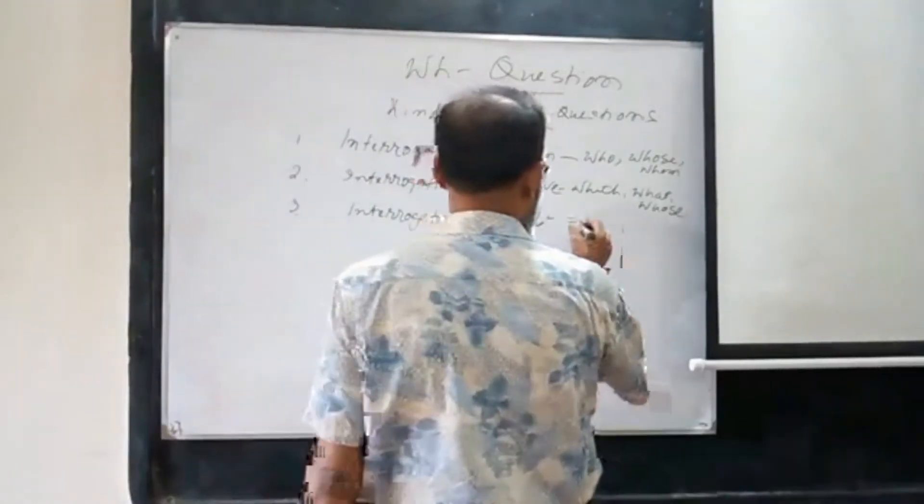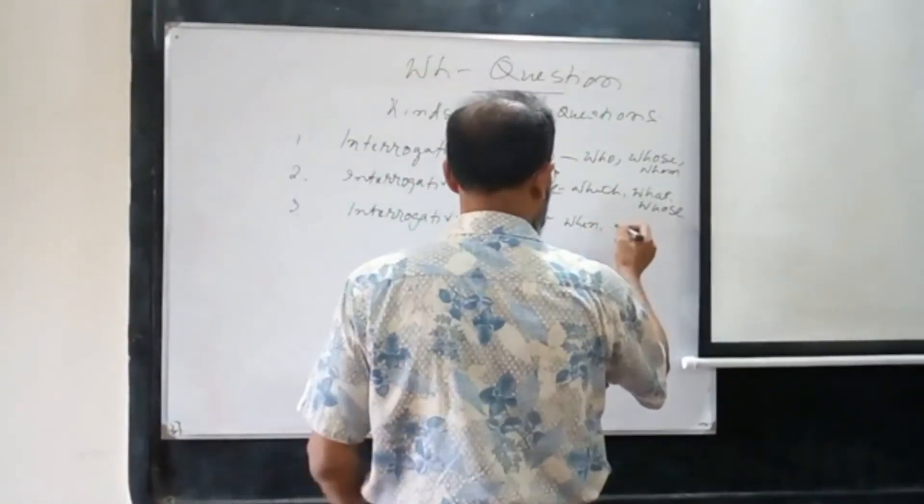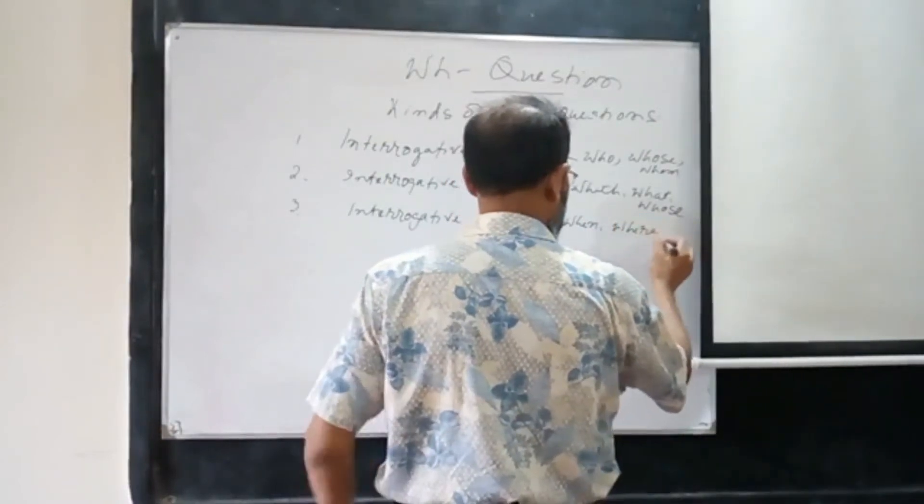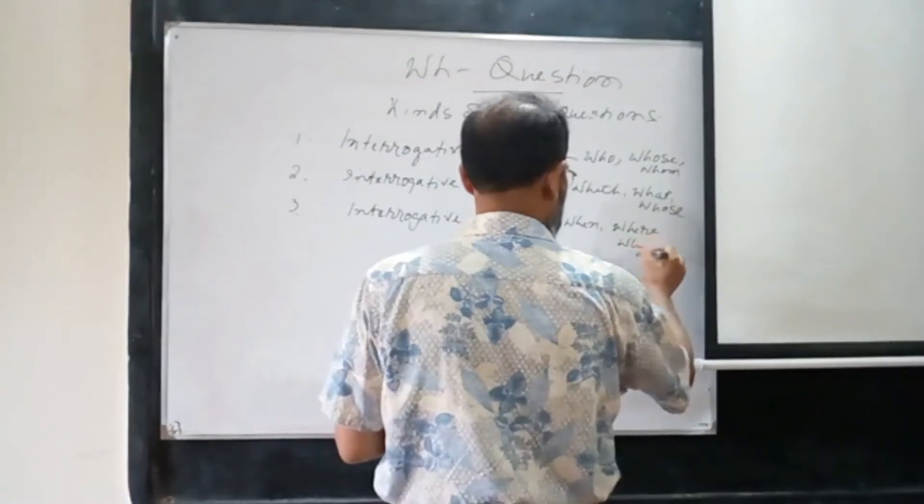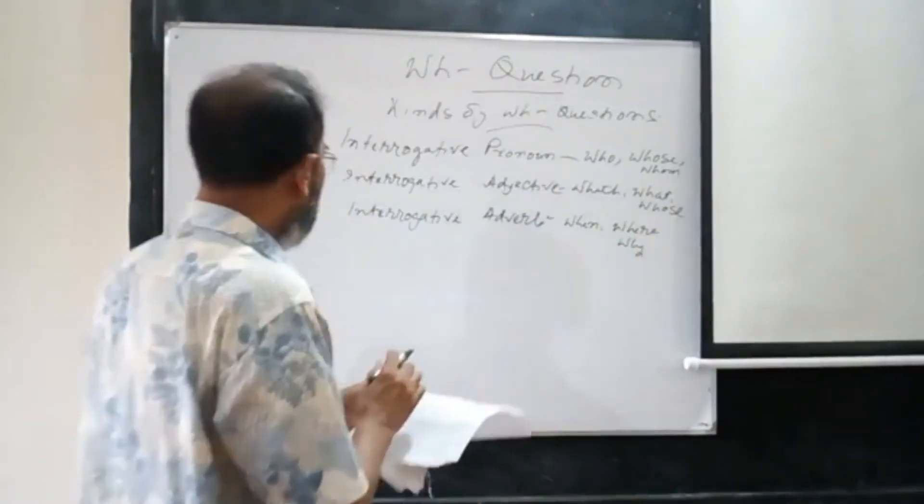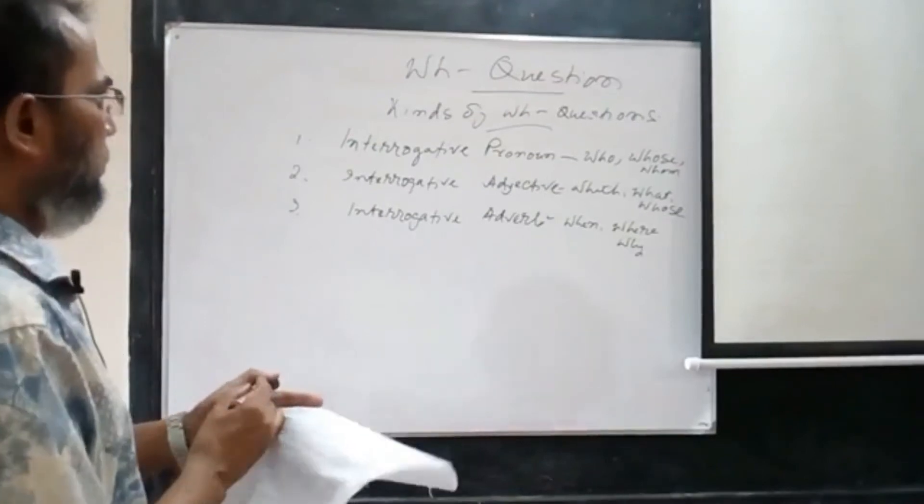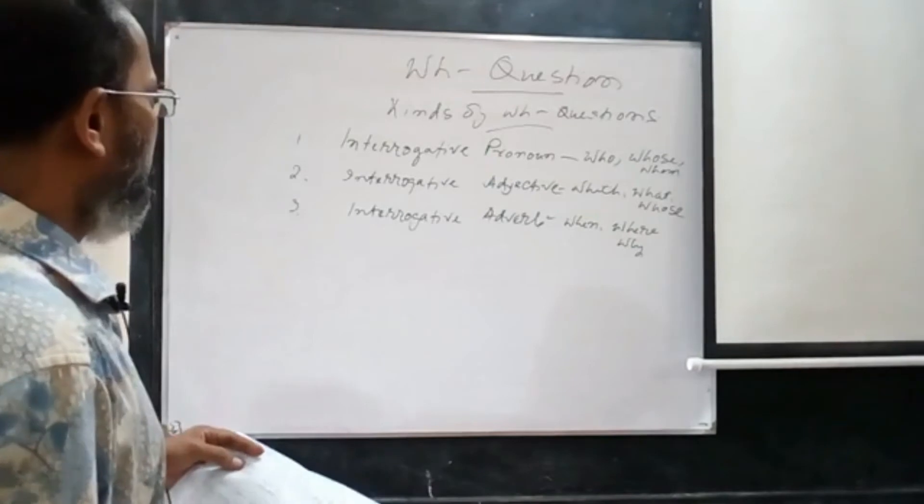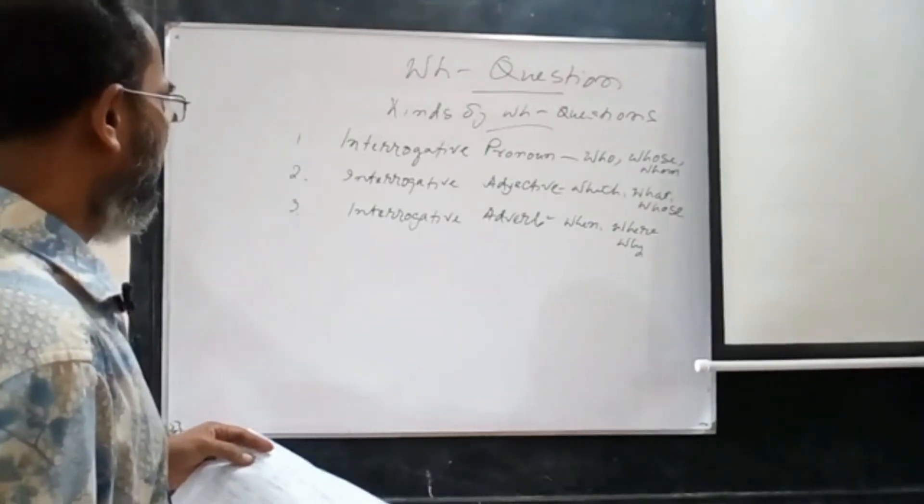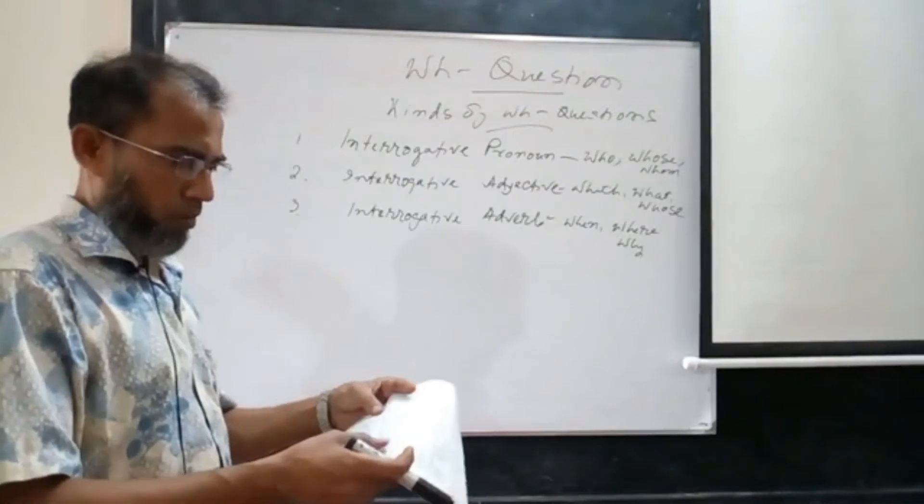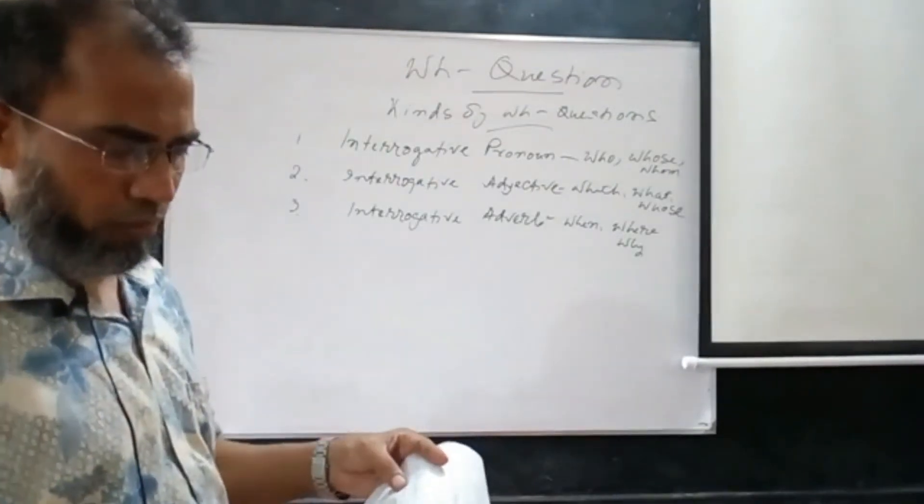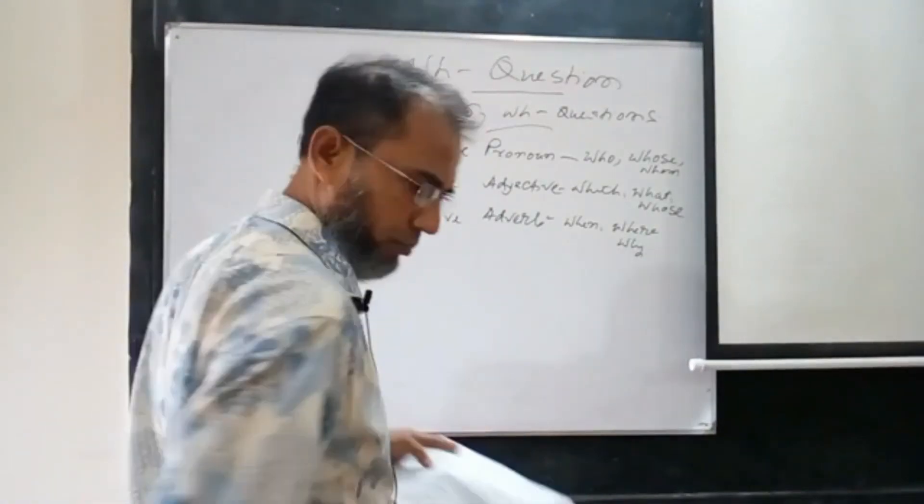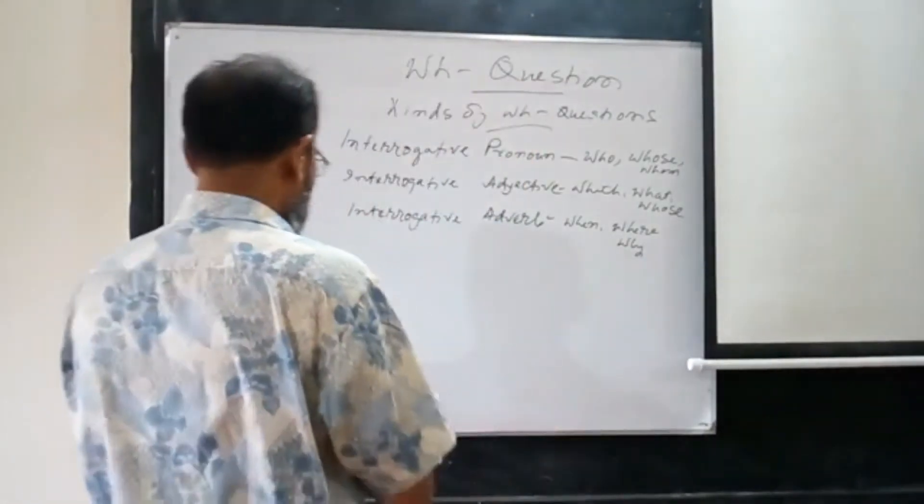Interrogative adverbs: when, where, why. Firstly, we have mentioned kinds of WH-questions. We have mentioned here three kinds: interrogative pronoun, interrogative adjective, and interrogative adverb. Now, for getting information we ask questions.